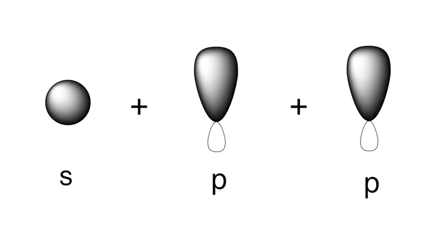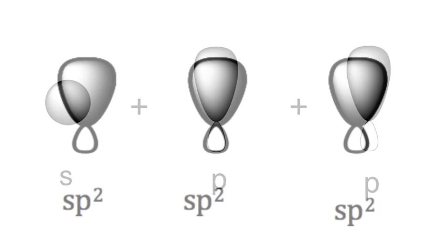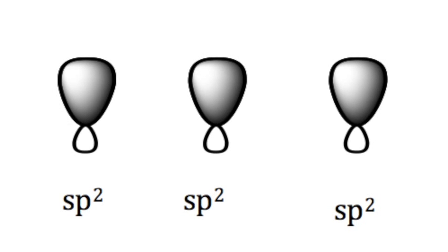For instance, when we say sp2, we put together one s and two p orbitals, giving us three identical orbitals that are one-third s and two-third p character.